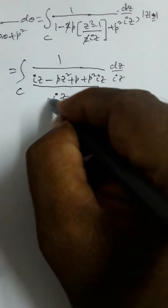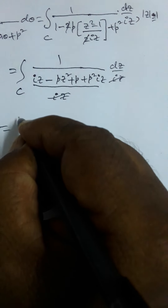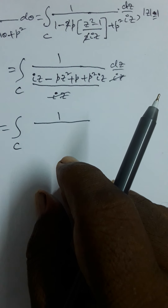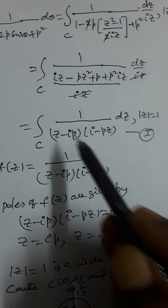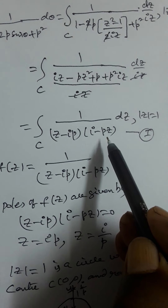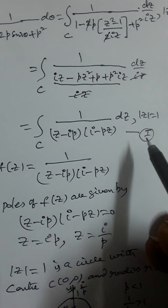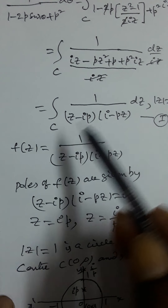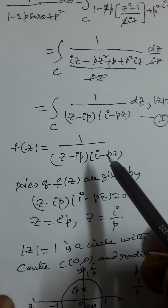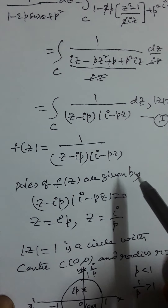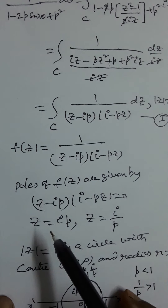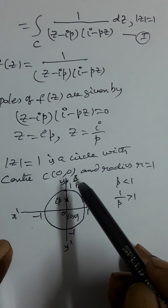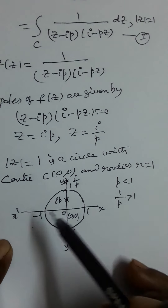On the unit circle |z| = 1, after cancellation of iz, the integral over C is of the form 1 by (z − ip)(i − pz). So f(z) = 1/[(z − ip)(i − pz)]. The poles of f(z) are found by equating the denominator to zero.